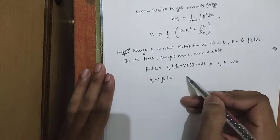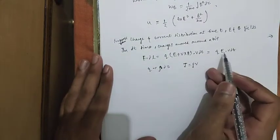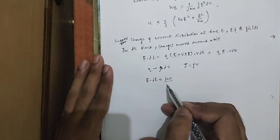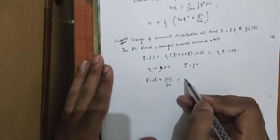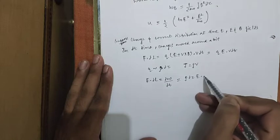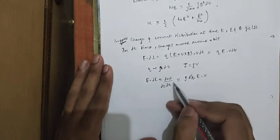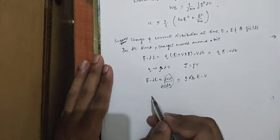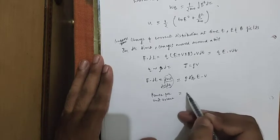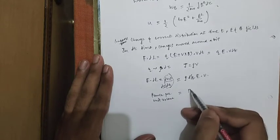In terms of charge, q = ρ dτ, and the current density J = ρv. Substituting the values of q and ρ, F·dl = dW = ρ dτ (E·v) dt. Taking dτ to one side, the power per unit volume equals ρv = J, which gives E·J.